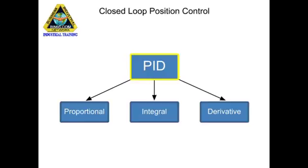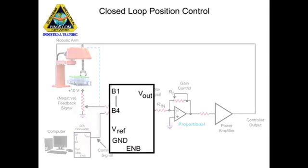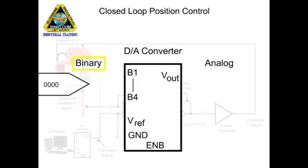The operation of PID mode control is demonstrated in the following robot arm position circuit. To move the robotic arm to a specific position, a command signal from the computer starts the motion sequence. The analog command signal voltage produced by the digital-to-analog converter determines the position of the arm.